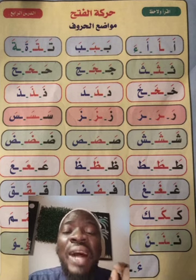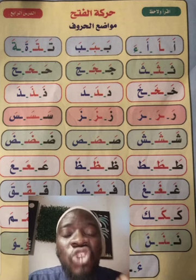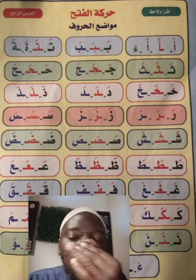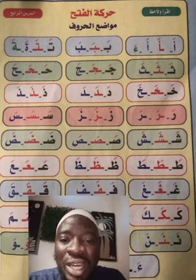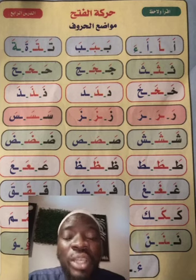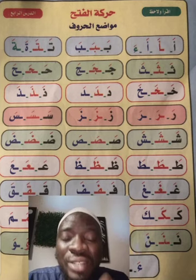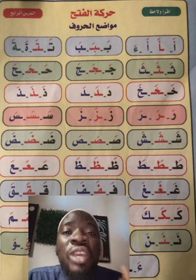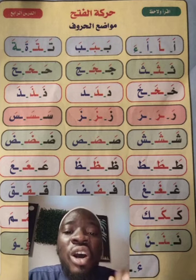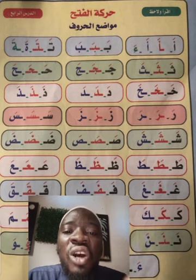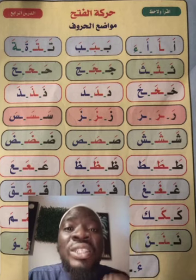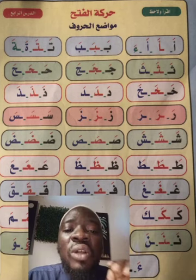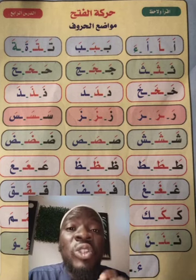The next letter is Sad. The letter Sad and Dad look alike — Sad has no dot while Dad has one dot above. You can see how Sad is written: at the beginning, at the middle — you can see it with red color — then the other form is when it ends a word. So Sad with Fathah: SA, SA, SA. Then the next letter is Dad — Dad with Fathah: DA, DA.